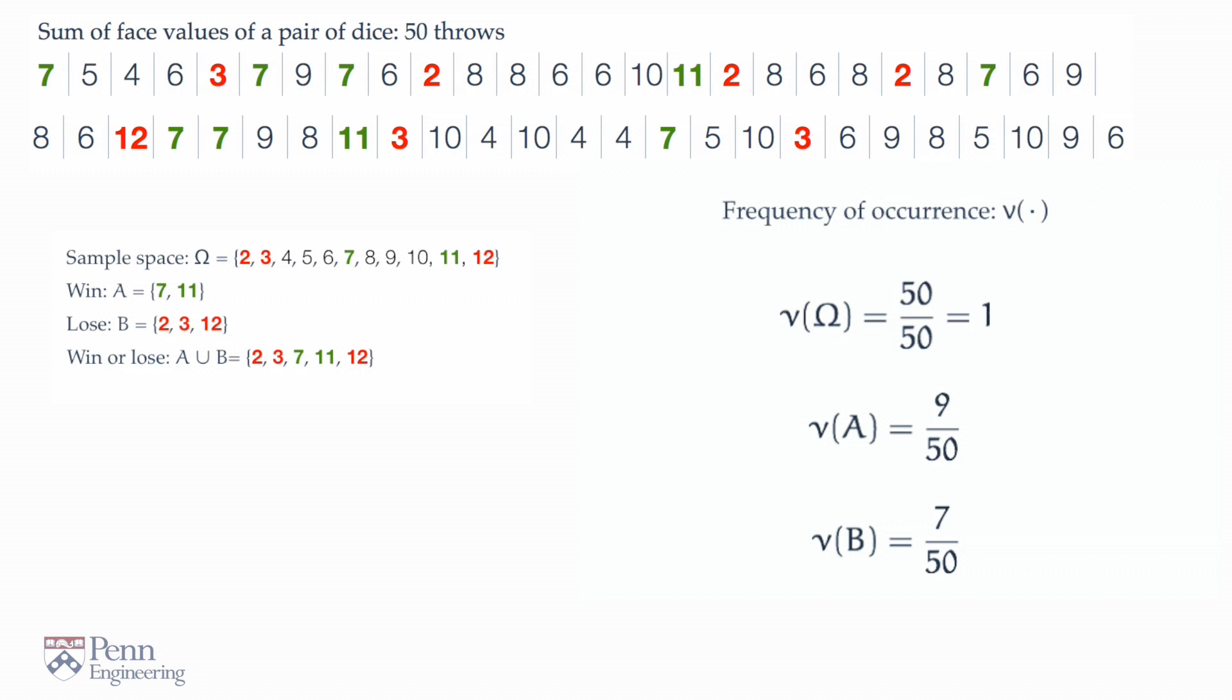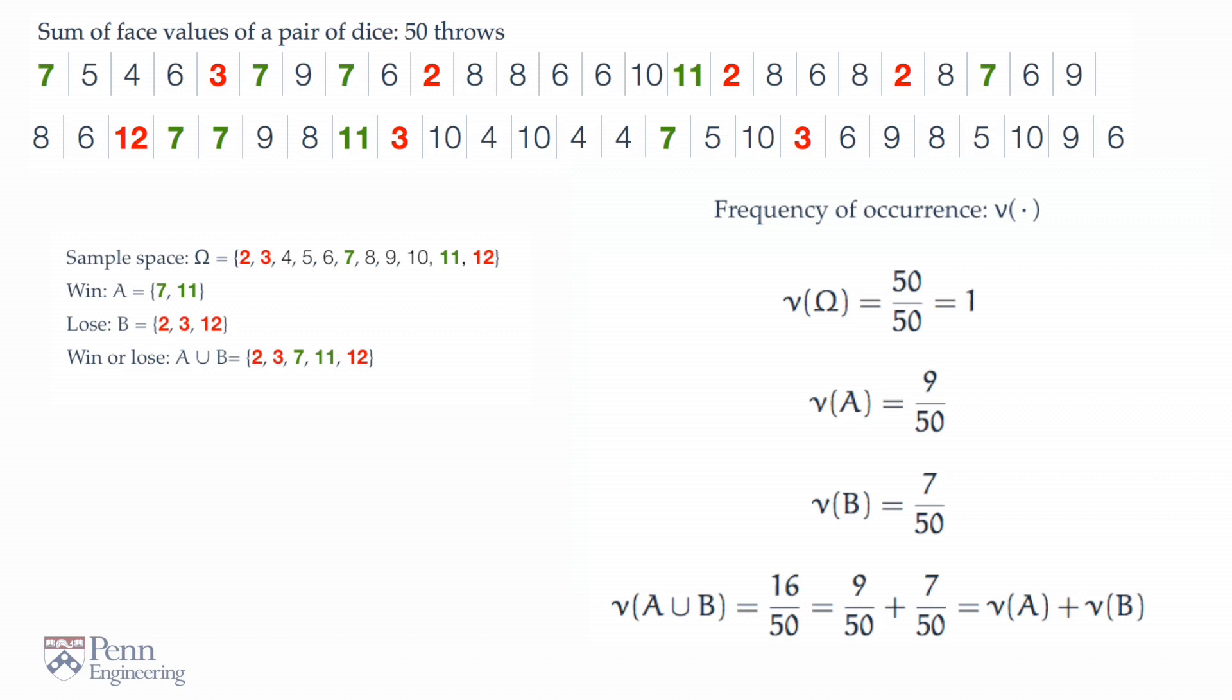Well, one terminates if one throws a 2 or a 3 or a 7 or an 11 or a 12. And there are exactly 16 such possibilities in the string of 50 I've shown you. Of course, 16 is exactly 9 plus 7. An outcome which triggers termination either belongs to the event that you win or to the event that you lose.